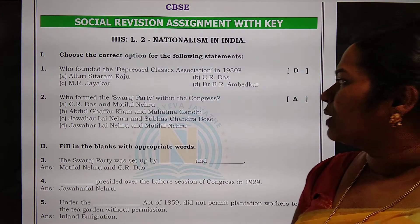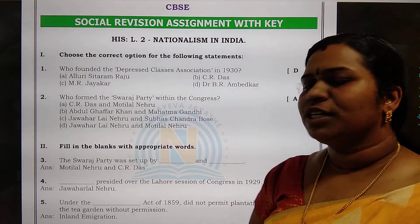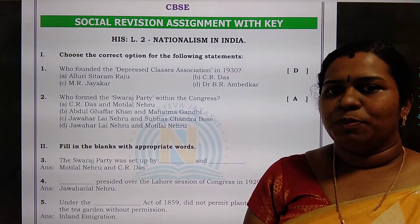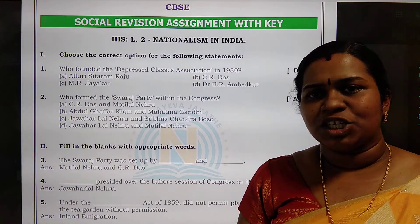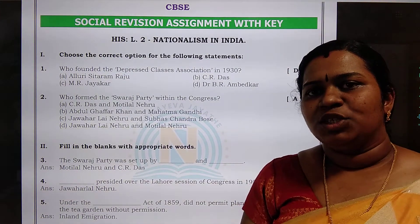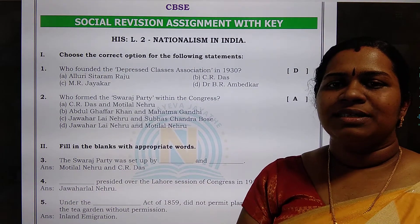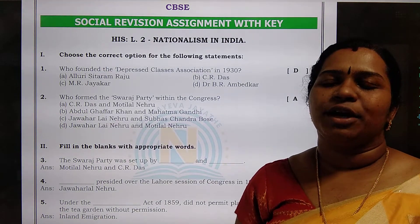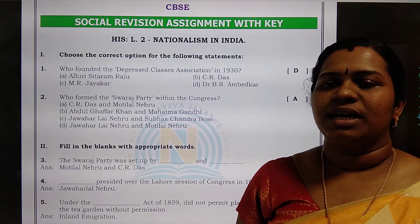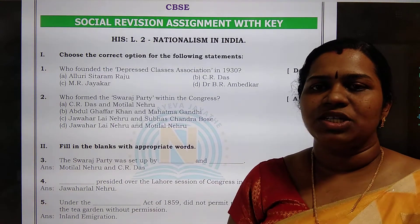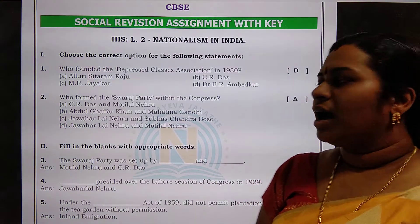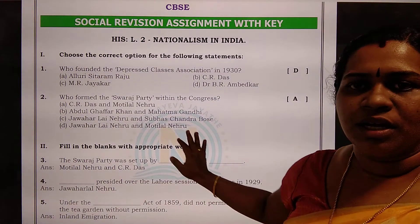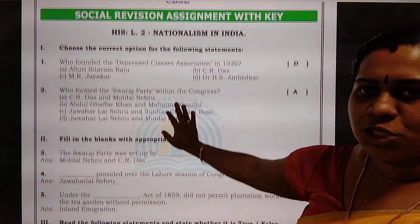Who formed the Swaraj Party within Congress? It participated in the elections. The Swaraj Party was formed by C.R. Das and Motilal Nehru. C.R. Das is nothing but Chittaranjan Das and Motilal Nehru — they formed the Swaraj Party.